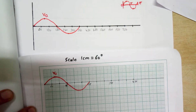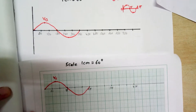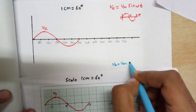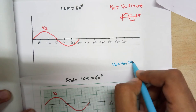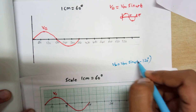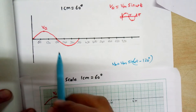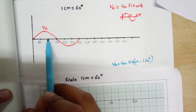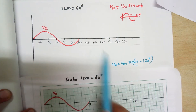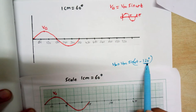Now for drawing Vb. Vb equals Vm sin(omega t minus 120 degrees). So we need to start from 120 degrees. Va starts from 0 degrees, but Vb needs to start from 120 degrees.